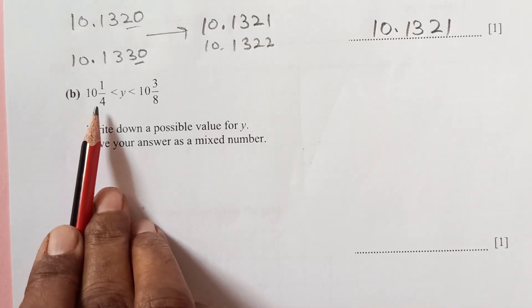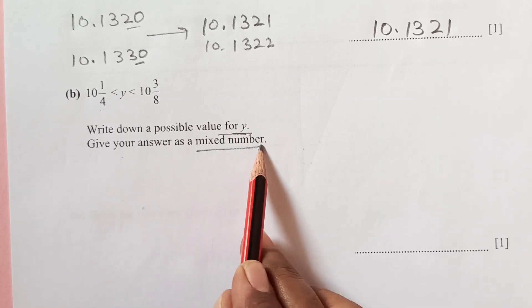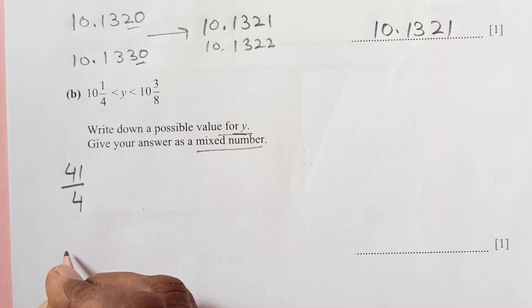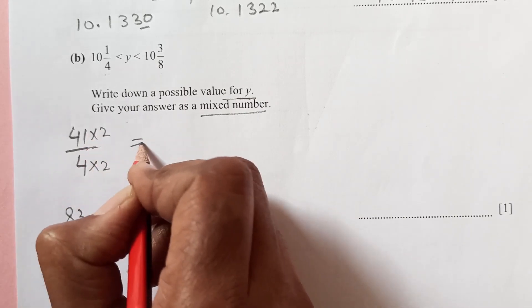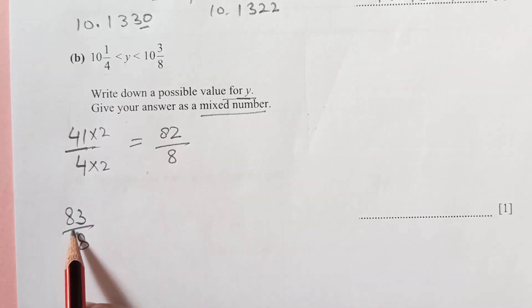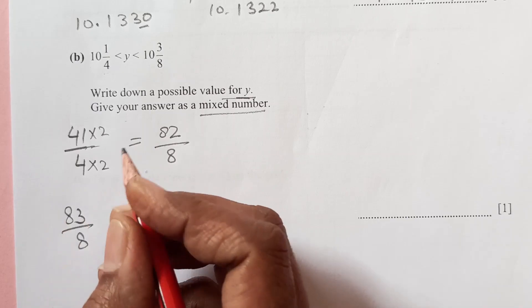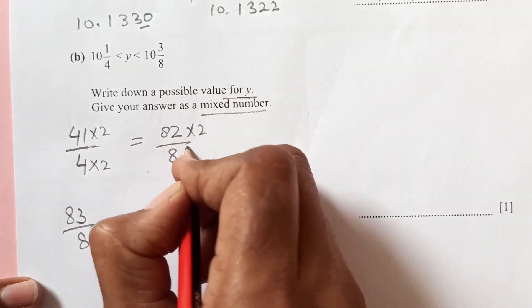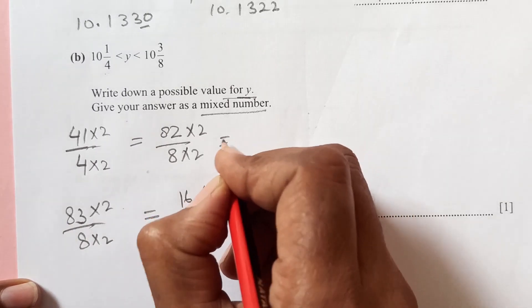Now part B, 10 and 1 over 4, and we need to look a number in between these two numbers. Write down the possible value for y. Give your answer as a mixed fraction. First of all, I will break this up. 10 times 4, 40 plus 1 is 41 over 4. The other one is 10 times 8, 80, 83 over 8. Now I will make the denominator same. To make denominator same, we will multiply here by 2. So this will become 82 over 8.